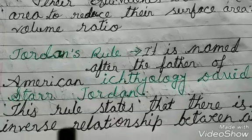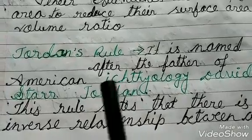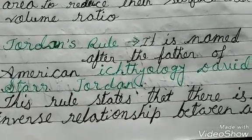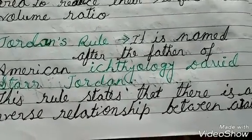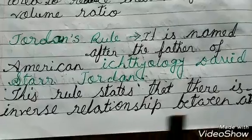Now, Jordan's rule. It is named after the father of American Ichthyology, David Starr Jordan.